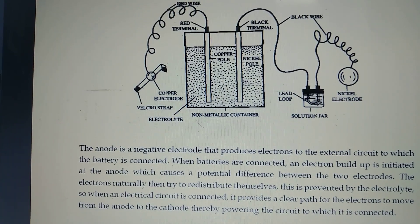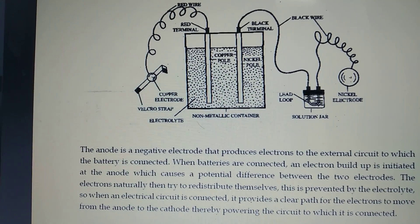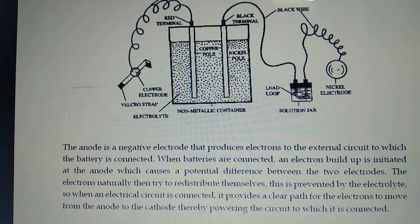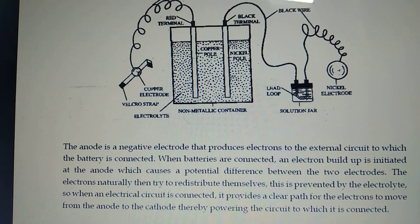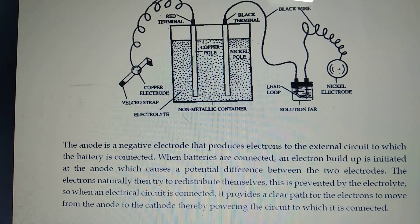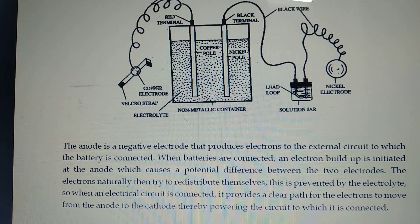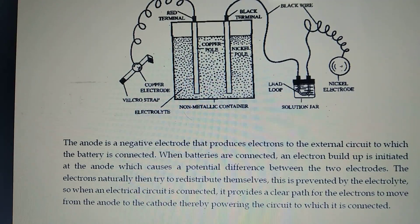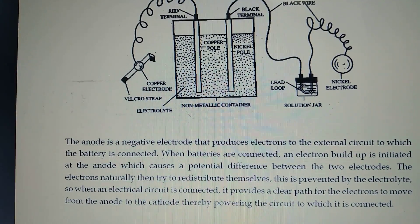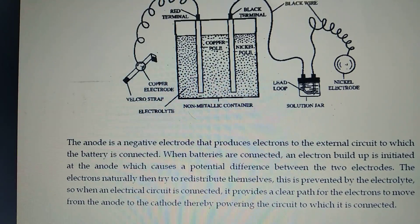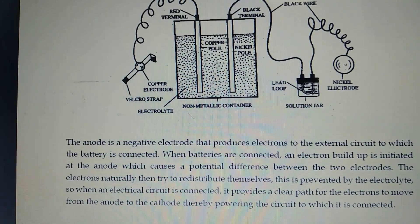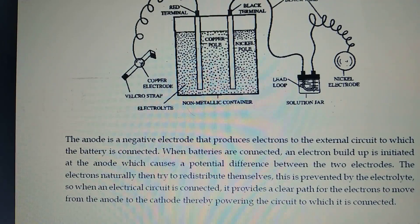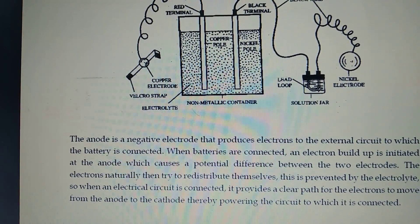The liquid-stage material is the electrolyte — for example, in lead acid batteries. The anode is the negative electrode that produces electrons to the external circuit to which the battery is connected. When the battery is connected, electron buildup is initiated at the anode, which causes a potential difference between the two electrodes. The electrons naturally try to redistribute themselves, but this is prevented by the electrolyte. When an electrical circuit is connected, it provides a clear path for the electrons to move from the anode to the cathode, thereby powering the circuit to which it is connected.